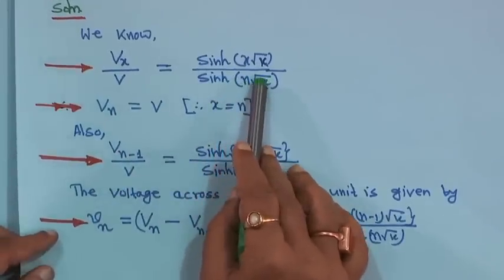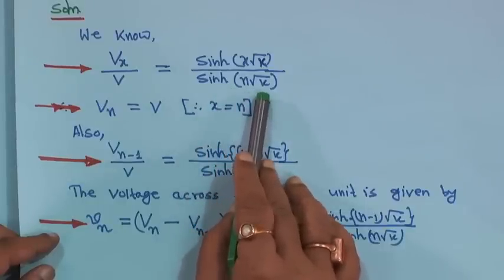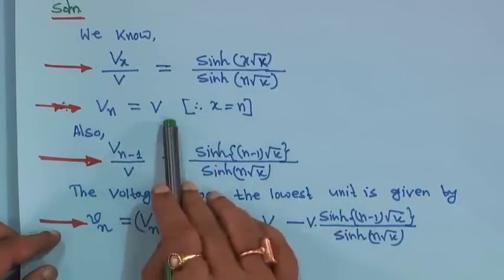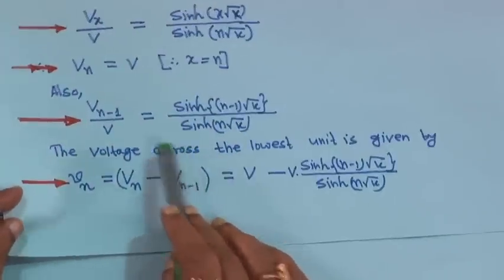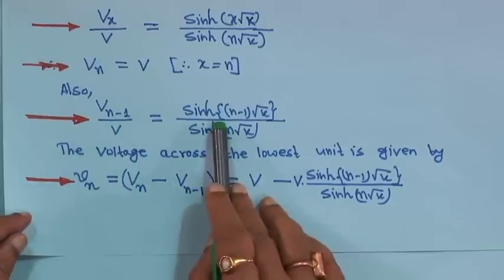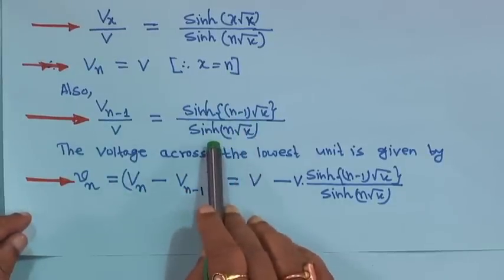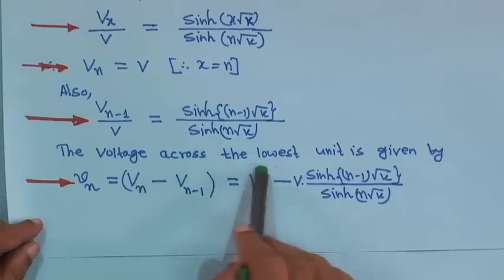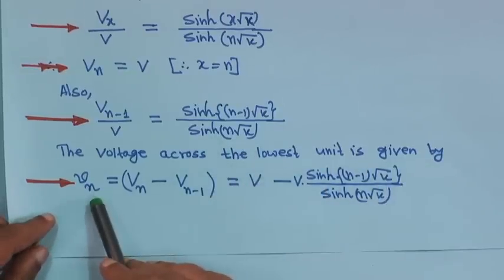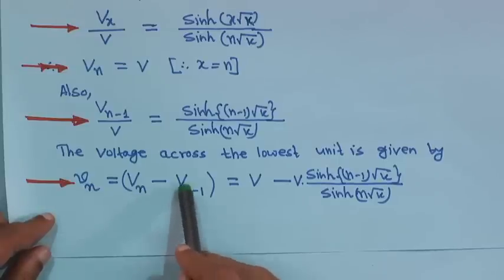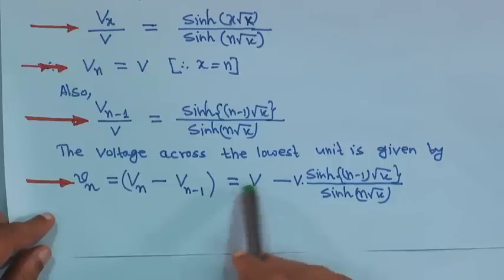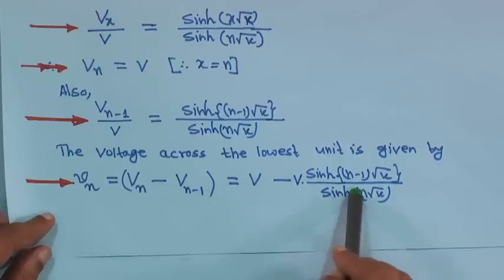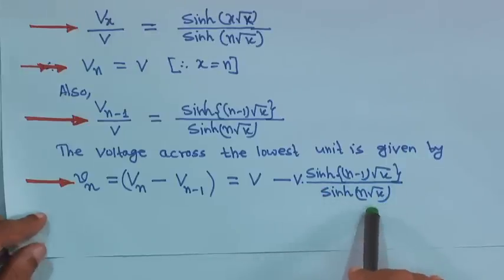We have already derived that V_x upon V is equal to sinh(x√k) divided by sinh(n√k). For x equal to n, V_n is equal to V. Therefore, we can write V_(n−1) upon V is equal to sinh((n−1)√k) divided by sinh(n√k). The voltage across the lowest unit is given by small V_n equal to capital V_n minus capital V_(n−1). Substituting: V_n equals V minus V times sinh((n−1)√k) divided by sinh(n√k).